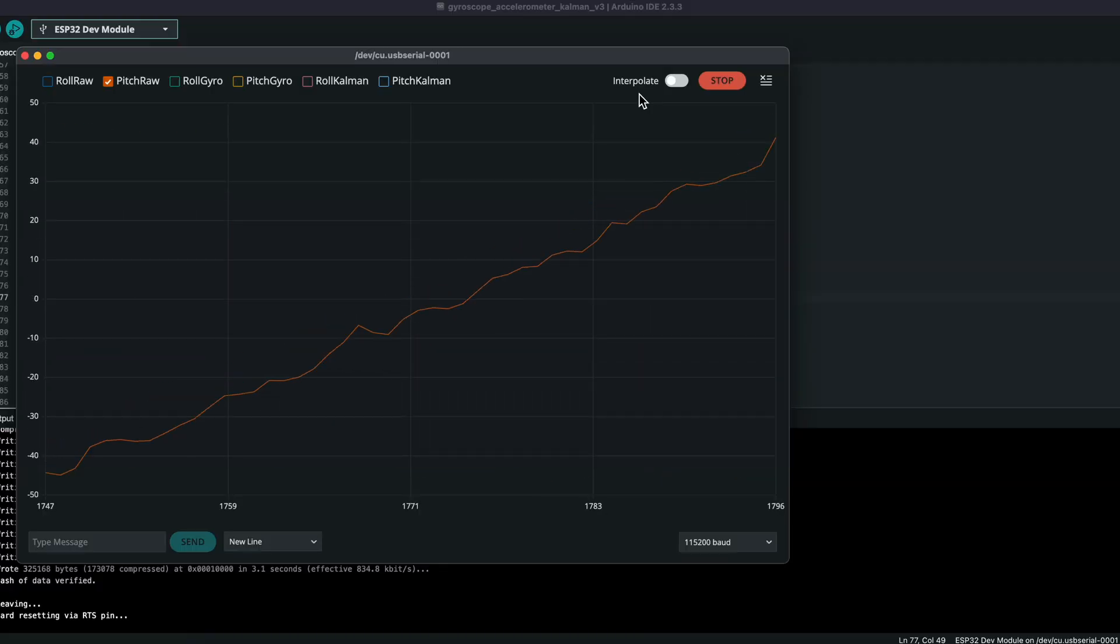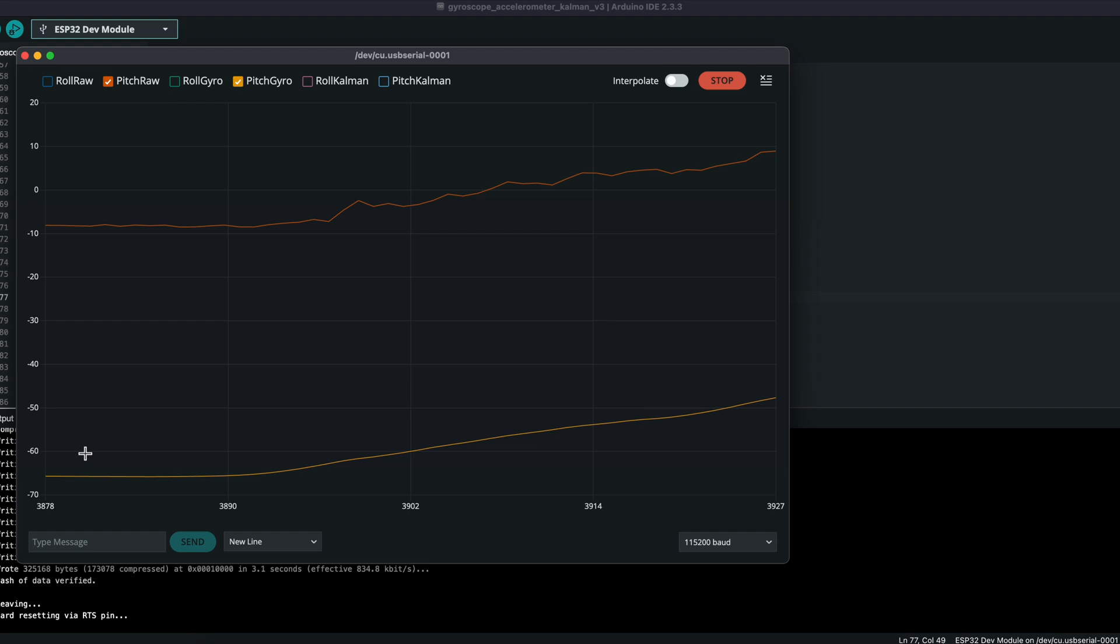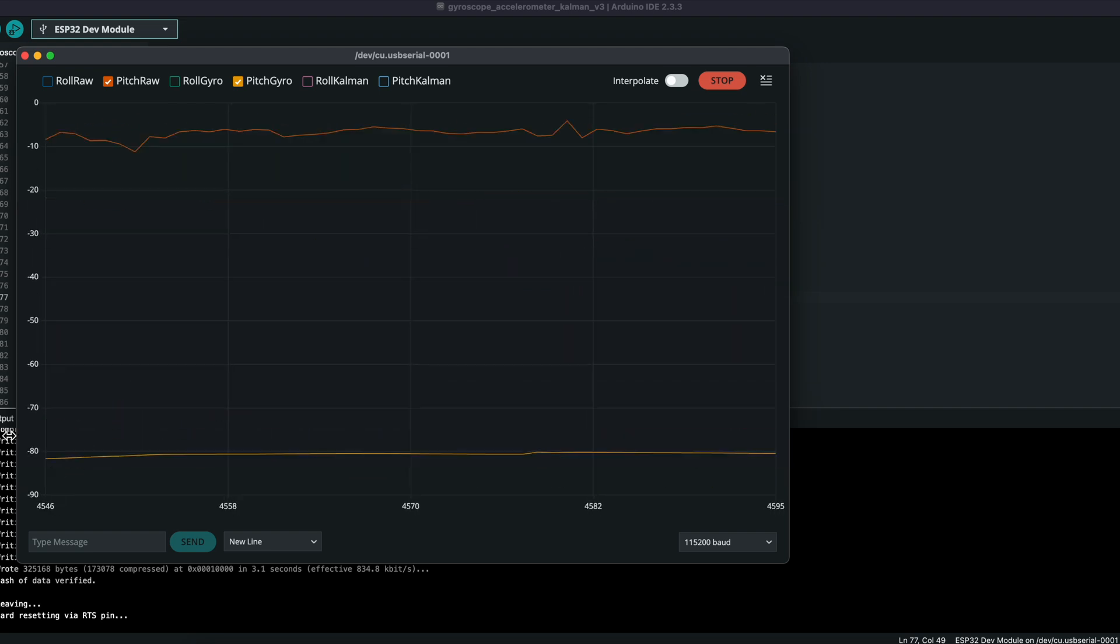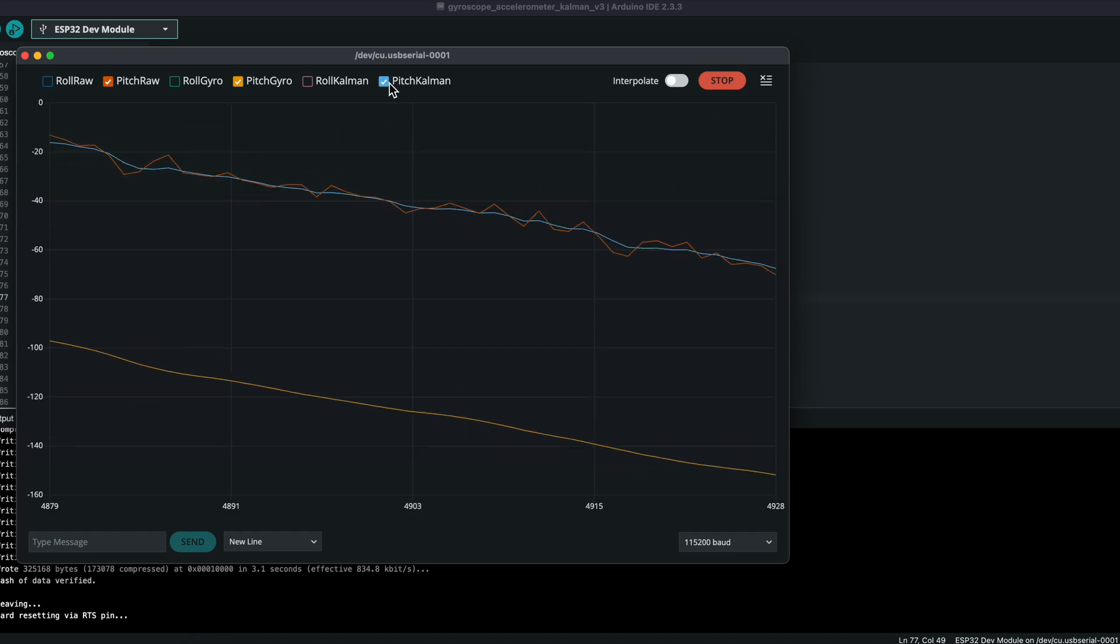Accelerometers give us orientation but are noisy, while gyroscopes measure rotation speed but drift over time. The Kalman filter combines the best of both.